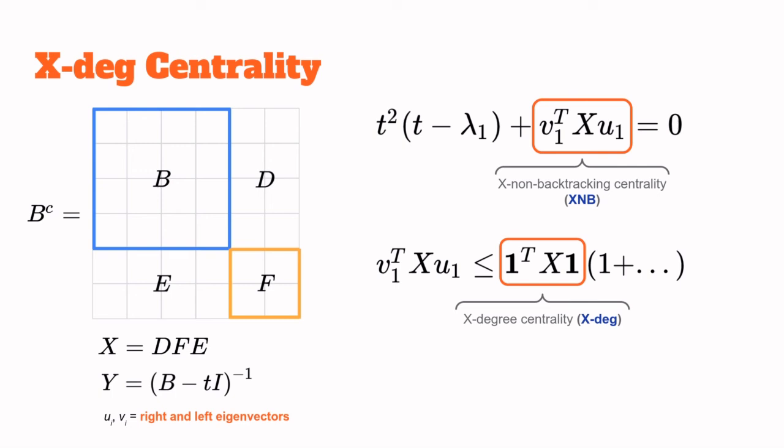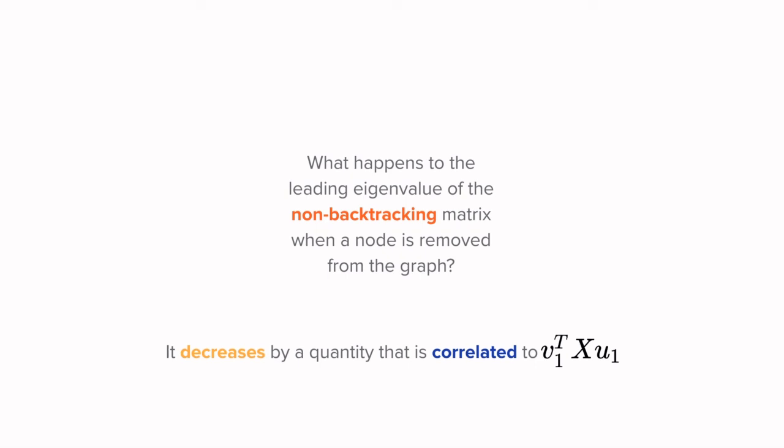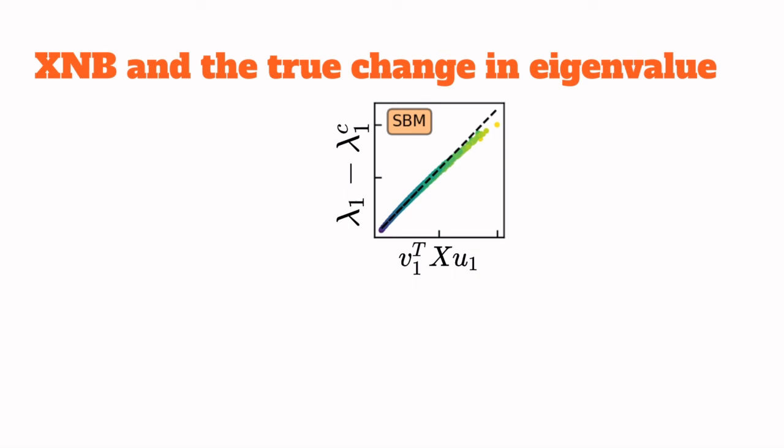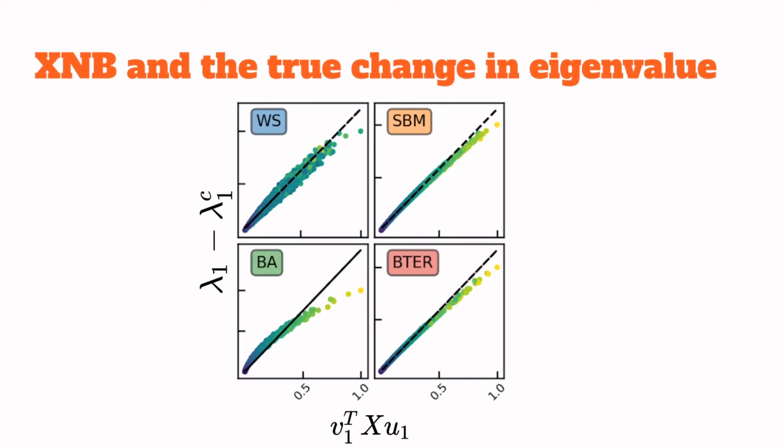So let me real quick go back to our main question. What happens to the eigenvalue when you remove a node? It decreases by a quantity that is correlated to the XNB centrality. How correlated? Very correlated. Here in the vertical axis, you have the true change in the eigenvalue after removing a node, and on the horizontal axis, you have the XNB centrality of that node. Each marker on the plot is a randomly chosen node from a randomly generated graph in the stochastic block model, and as you can see, there is a strong correlation, and the same pattern is repeated for other kinds of graphs.